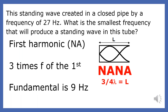Example two. This standing wave is created in a closed pipe by a frequency of 27 Hz. What is the smallest frequency that will produce a standing wave in this tube? This is the third harmonic, so it is three times the fundamental. If this frequency is 27 Hz, the fundamental would be 9 Hz, because 27 is three times the fundamental.